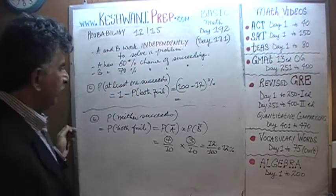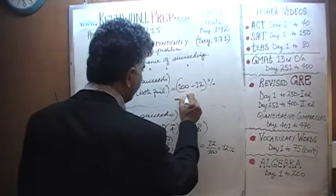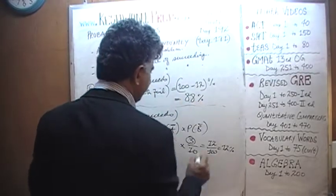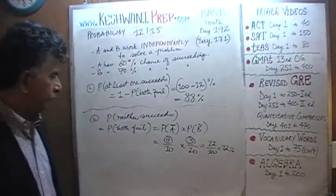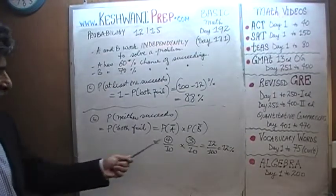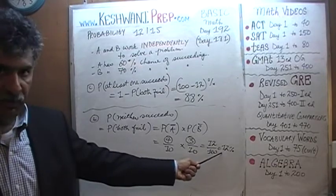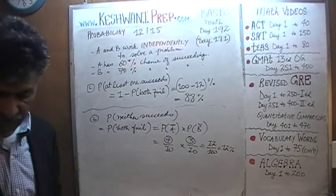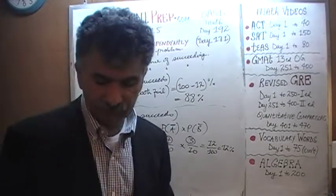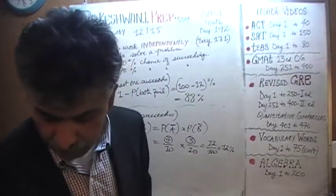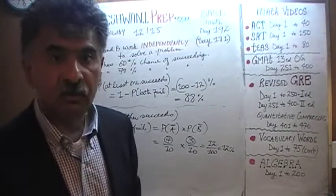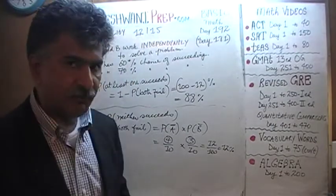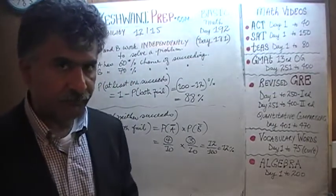So it's simply 100 minus 12 percent — 100 minus 10 is 90, so it's going to be 88 percent. It's the mirror image: the odds that they will both fail is 12%, therefore there's an 88% chance that at least one of them will succeed. I'll see you tomorrow — bye now.